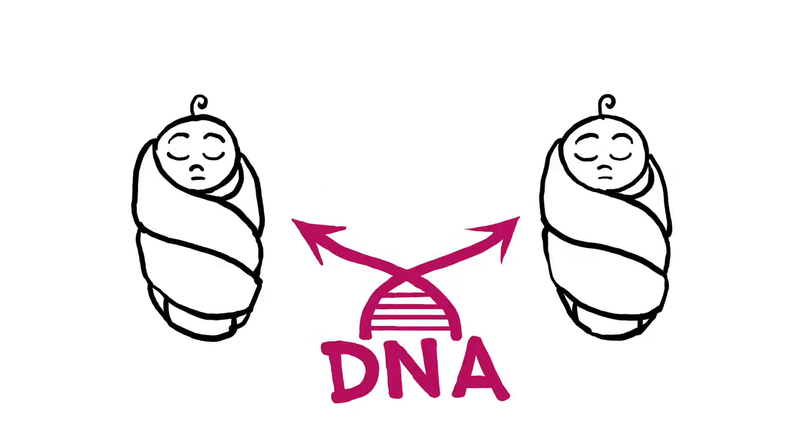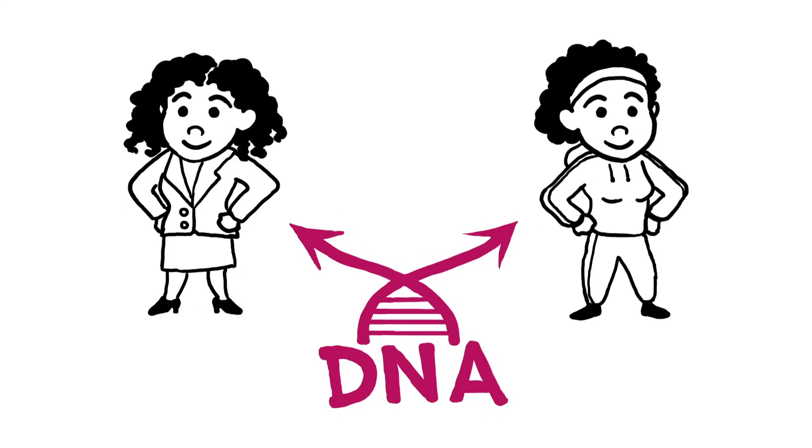Here's a conundrum. Identical twins originate from the same DNA, so how can they turn out so different, even in traits that have a significant genetic component?